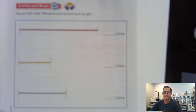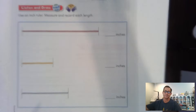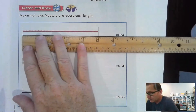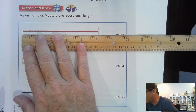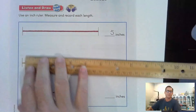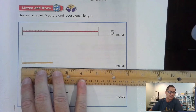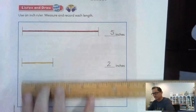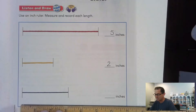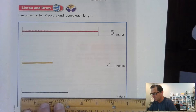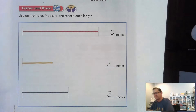Go ahead and measure the three pieces of yarn on this page to the nearest inch. Make sure you're lined up with zero. It looks like my first one is about five inches, the next one is going to be less than five — I would call that two inches.